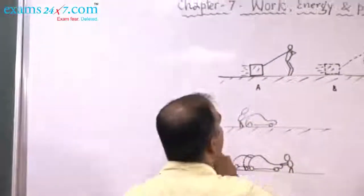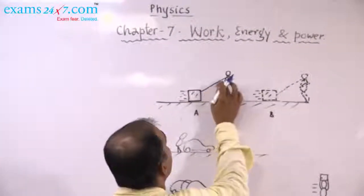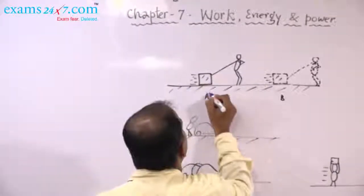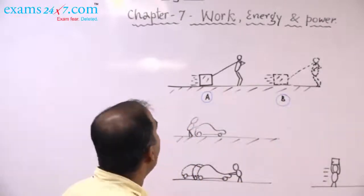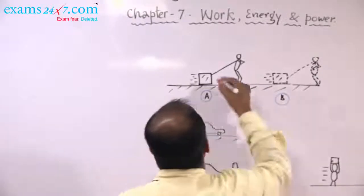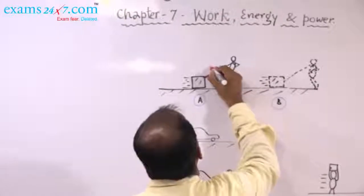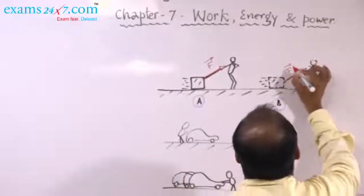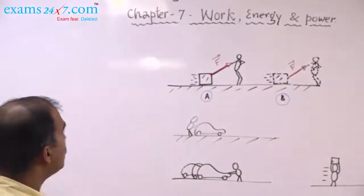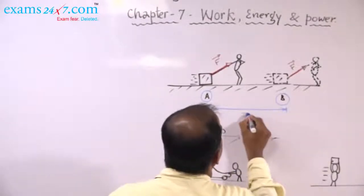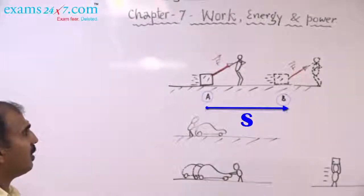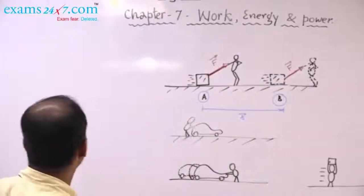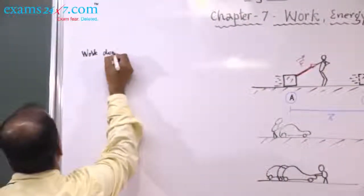Let's consider a block being pushed along by a long thread held by a man who pulls it towards the right. It moves from initial point A to final point B. He applies a constant force along the rope — a vector whose magnitude and direction are both fixed. In so pulling it, there will be a displacement S. When a force F causes a displacement S, a certain amount of work is said to be done. This is work done by a constant force.